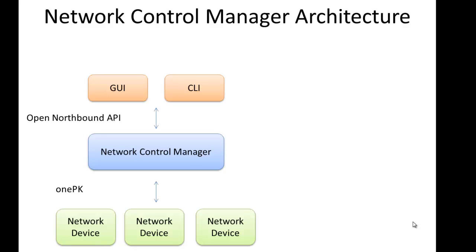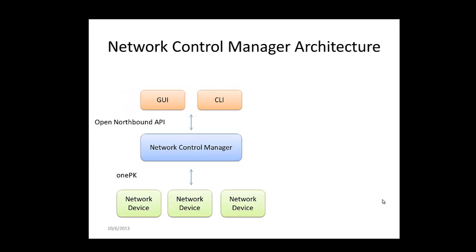The bottom tier are the network devices or network elements — these could be switches, these could be routers. All they have to do is support the 1PK agent on the device. These devices communicate to the Network Control Manager, which is the core application built here and can really be thought of as an SDN controller. The southbound protocol being used here is 1PK, where very commonly in the industry OpenFlow is used. But in Cisco devices, there's the capability to leverage 1PK between the controller and the network device.